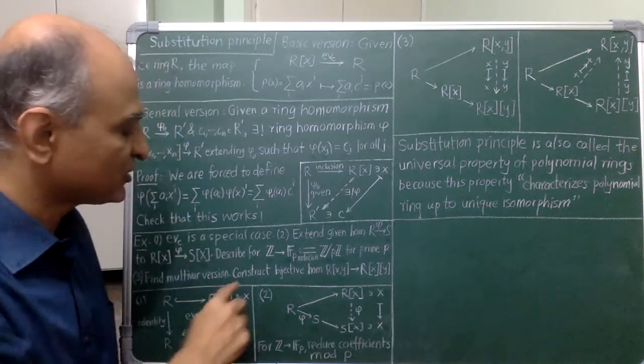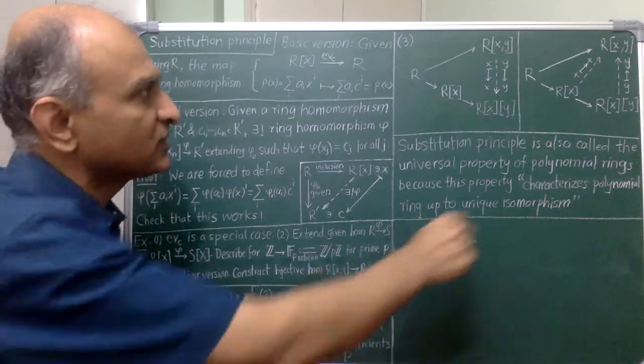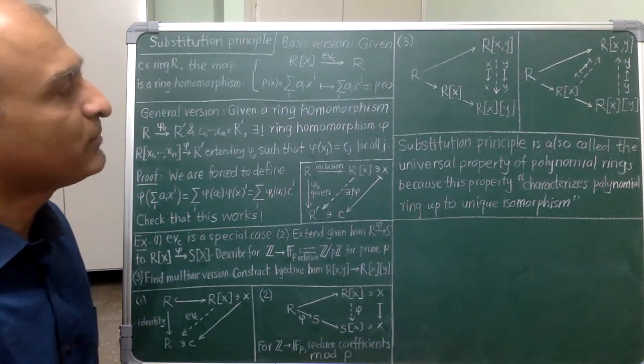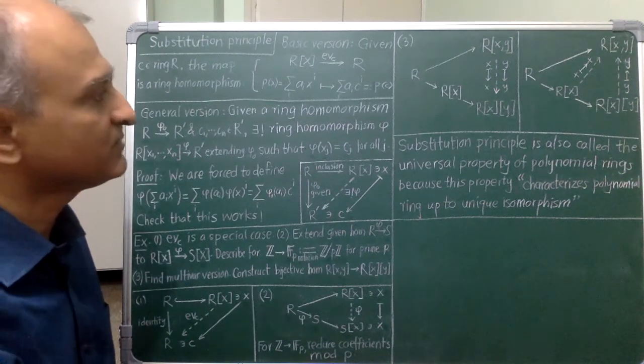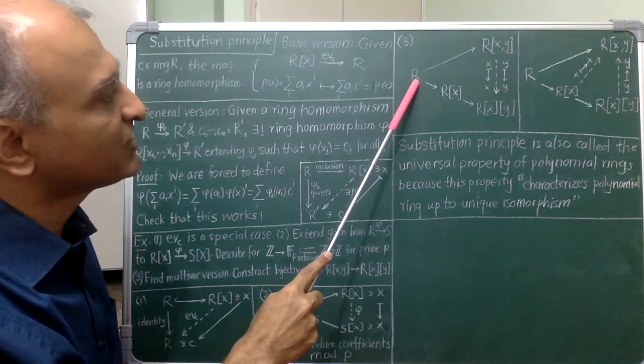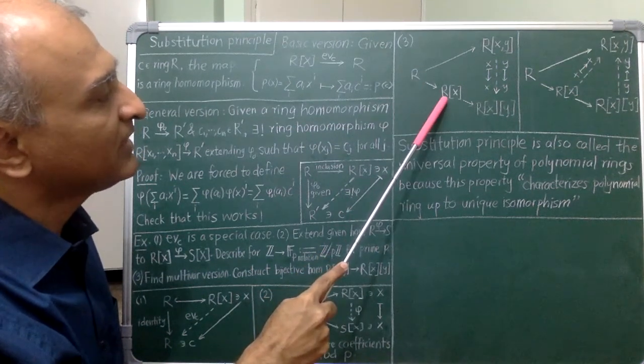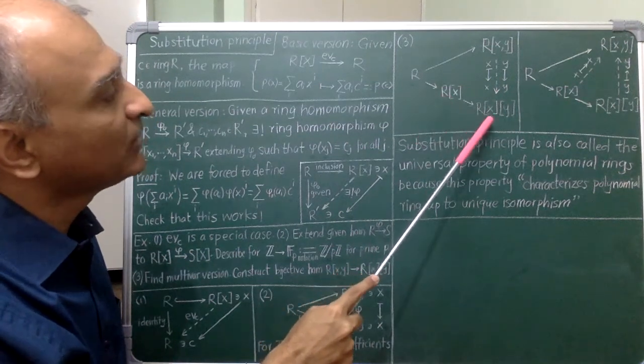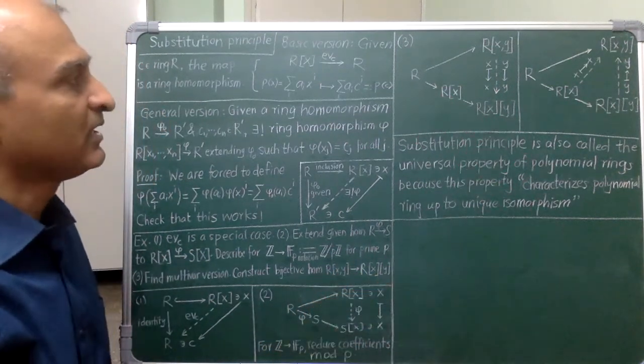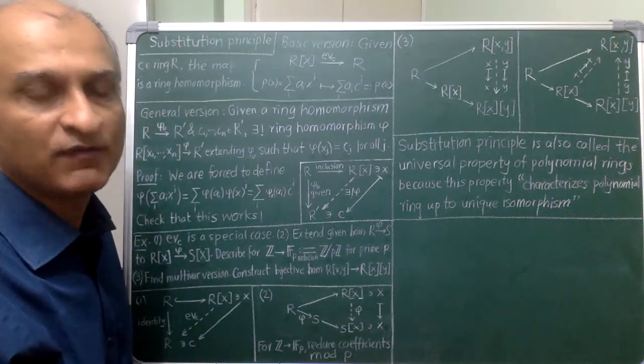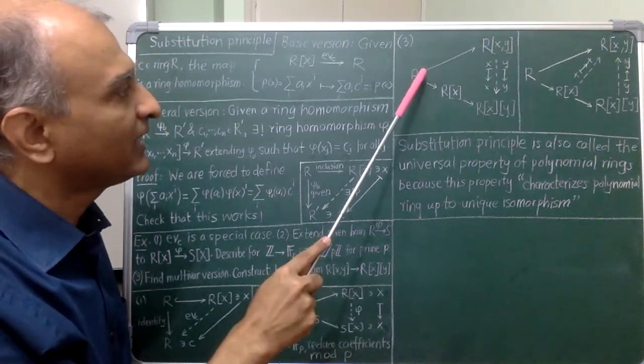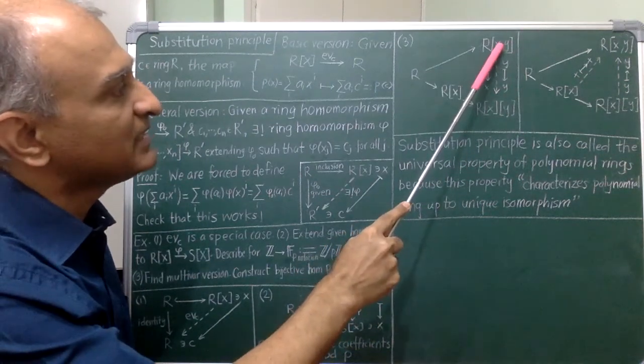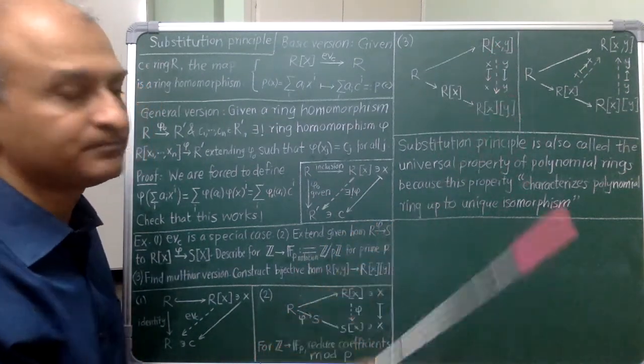Now let us use this to construct the required bijective homomorphism from this top ring to the bottom ring. The map that I am going to extend here is a composition of two injective homomorphisms. The first is the natural inclusion from R to R[x] and then that is followed by the natural inclusion of R[x] into the polynomial ring over that in the single variable y. By the two variable version of the substitution principle, I get to extend this map to the top ring and so I do that by sending x to x and y to y.